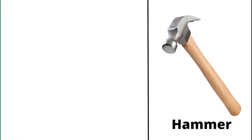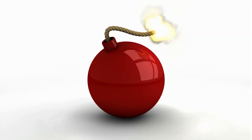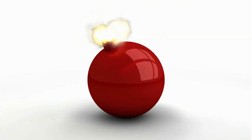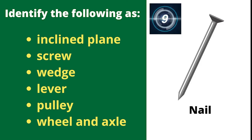Application. Here are some examples of simple machines we use in our daily lives. Identify each as inclined plane, screw, wedge, lever, wheel and axle, or pulley. Try to answer before the bomb explodes and reveals the correct answer. Are you ready? Here we go!